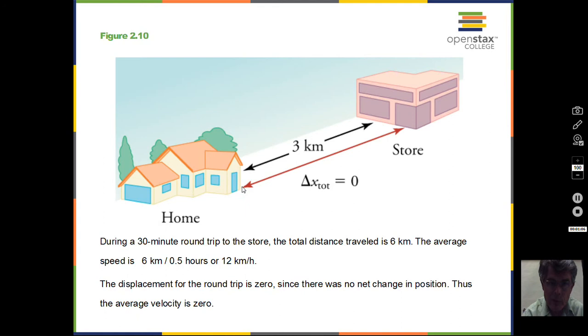So again, if we're starting at this home and going to the store and coming back, and it takes a half hour to do that, 30 minutes, we can calculate the average speed by taking the total distance traveled, three kilometers there, three kilometers back, total distance is six kilometers. And divide by 0.5 hours, we'd have 12 kilometers per hour would be the speed there, the average speed.